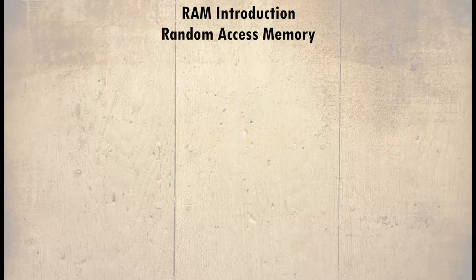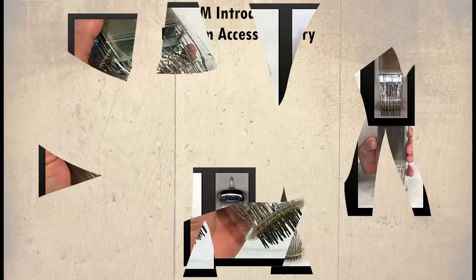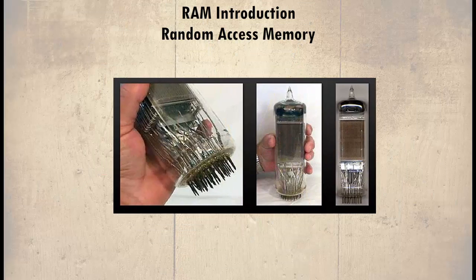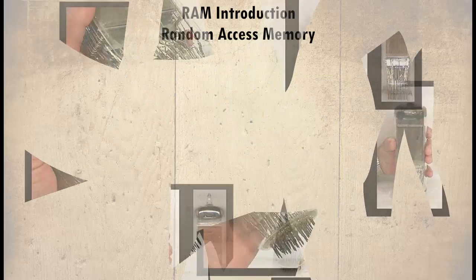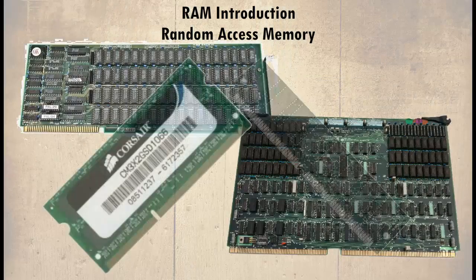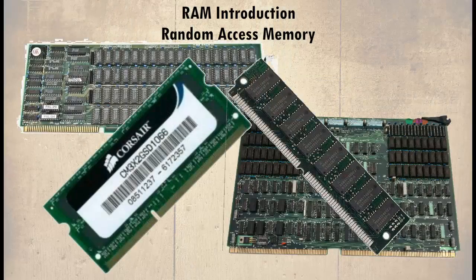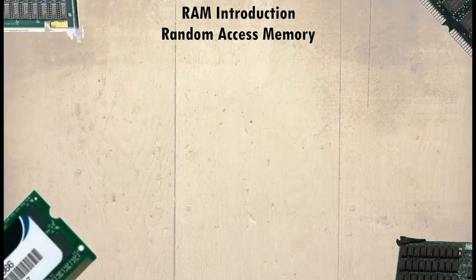RAM, or random access memory, has changed over the years — from large tubes to much smaller devices that use less power and are much more efficient. They have also become faster and have larger capacities.